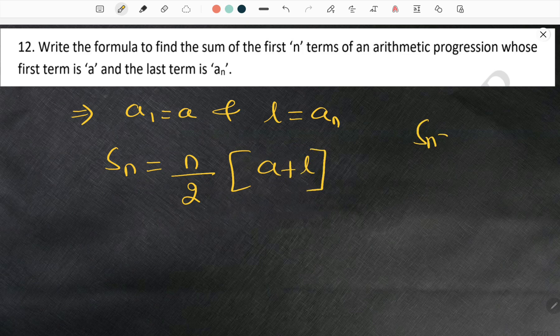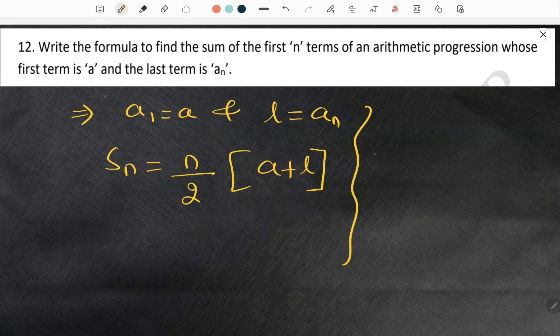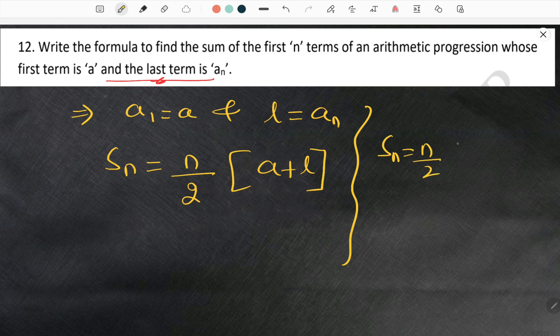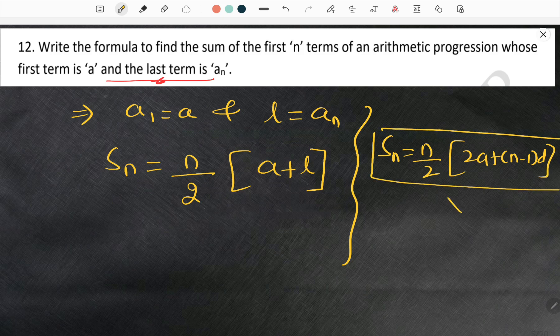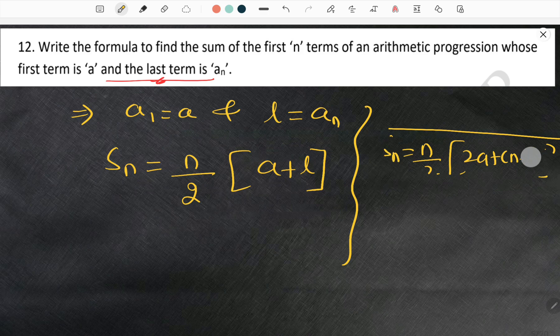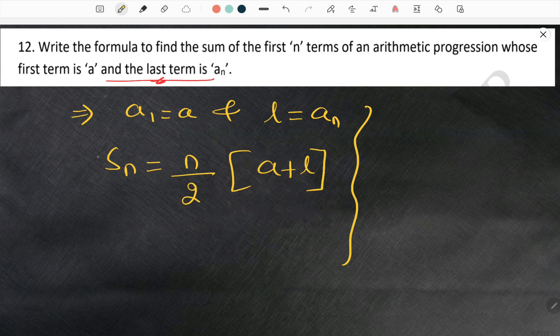We have another formula SN is equal to N by 2 bracket 2A plus N minus 1 into D. But this formula doesn't come here because they are mentioning about last term. So that is why I am rubbing it off. I am explaining the things to you.